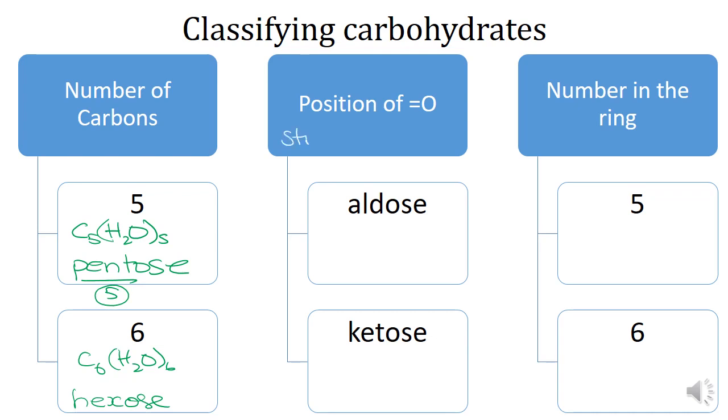If it is an aldose, aldose comes from aldehyde, and it is the C double bond O, single bond H at the end of the molecule. If it is a ketose, it's a ketone, so it's where you've got the carbon-oxygen in the middle and then the sugar continues on on either side.